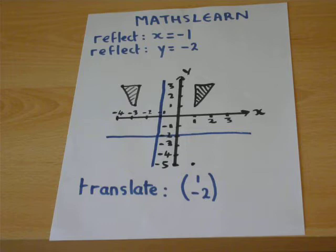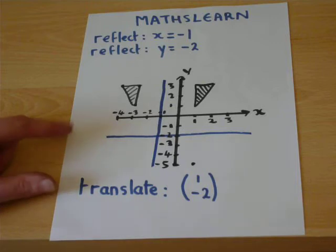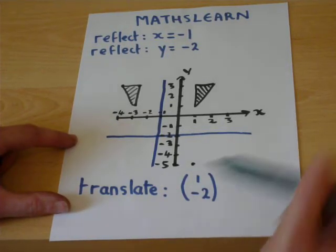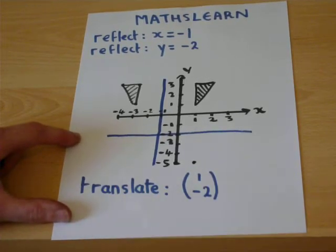What we can do is a second transformation, which is called translation. It's given in a vector form, with two numbers. Now the top number is the horizontal motion, which translates means move.